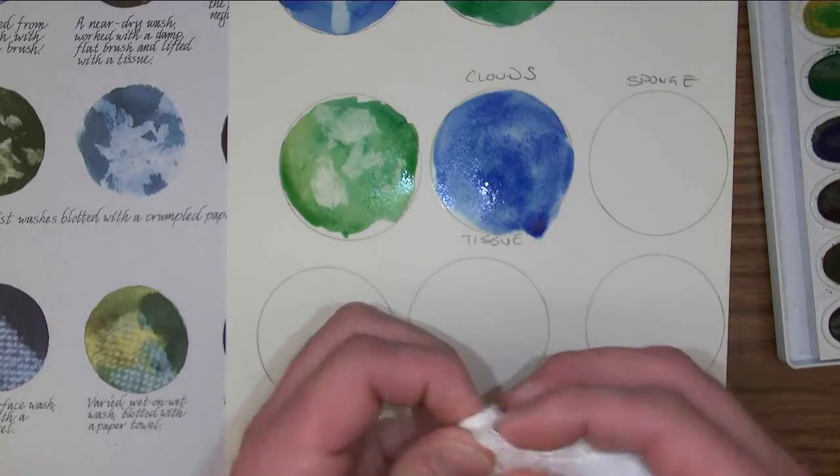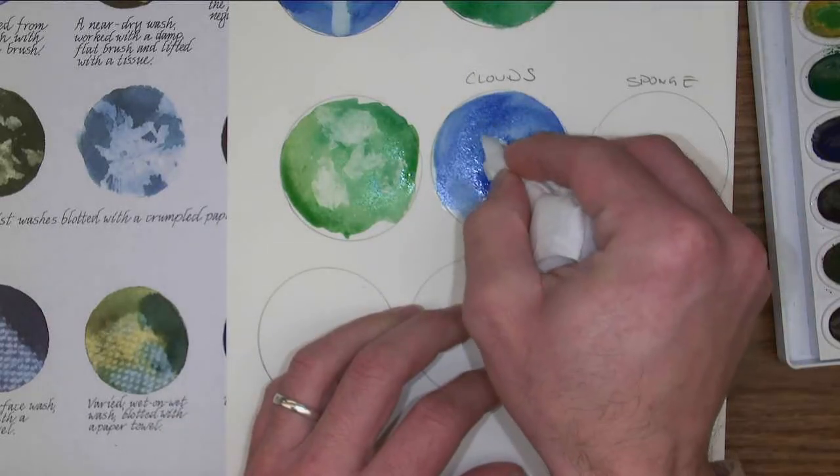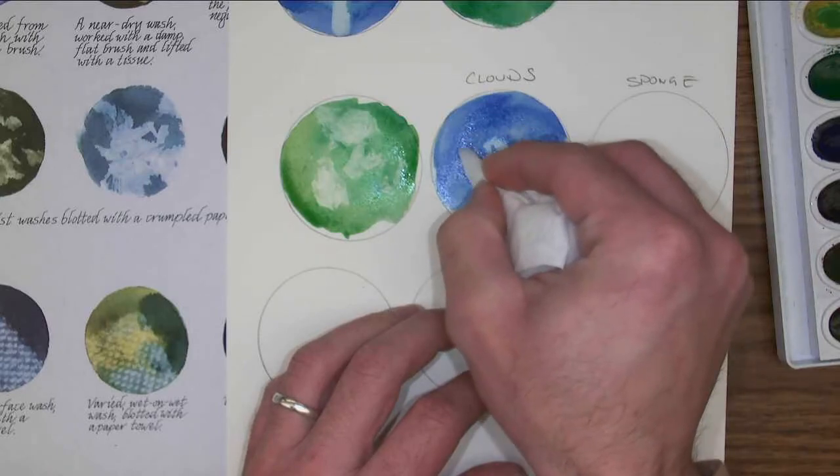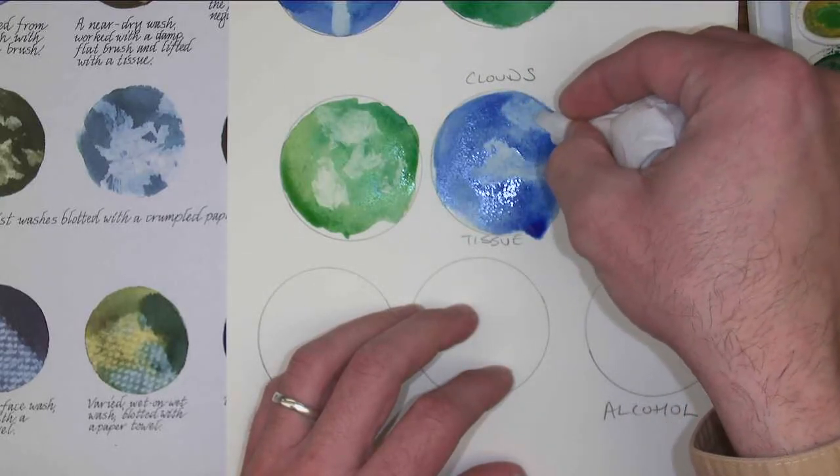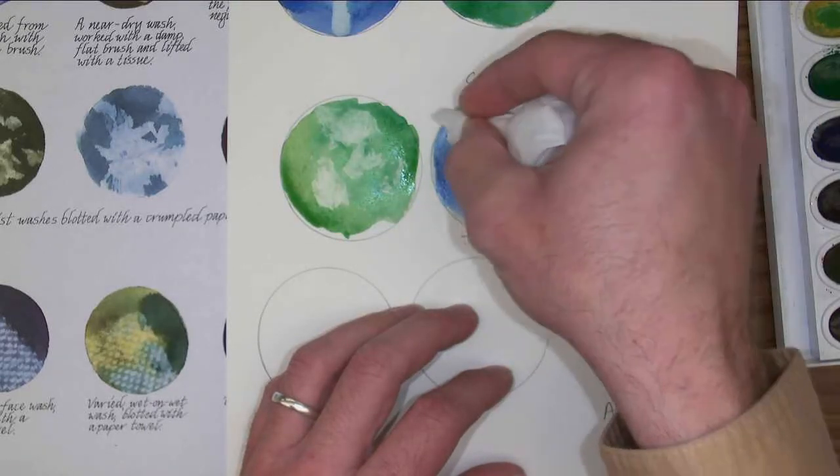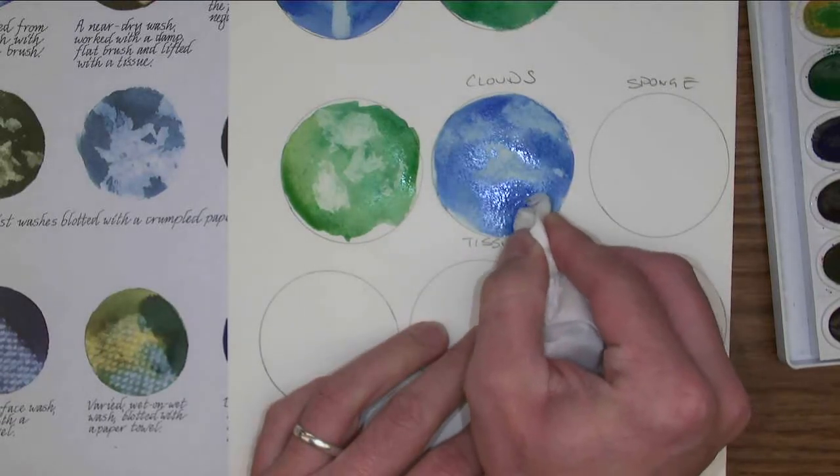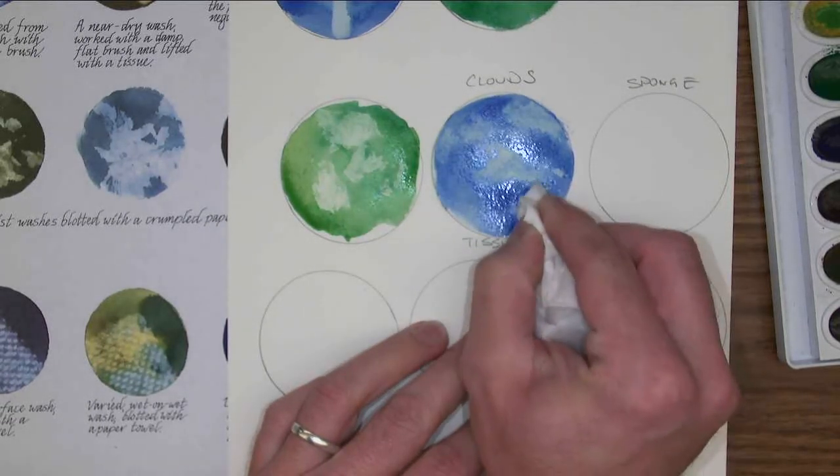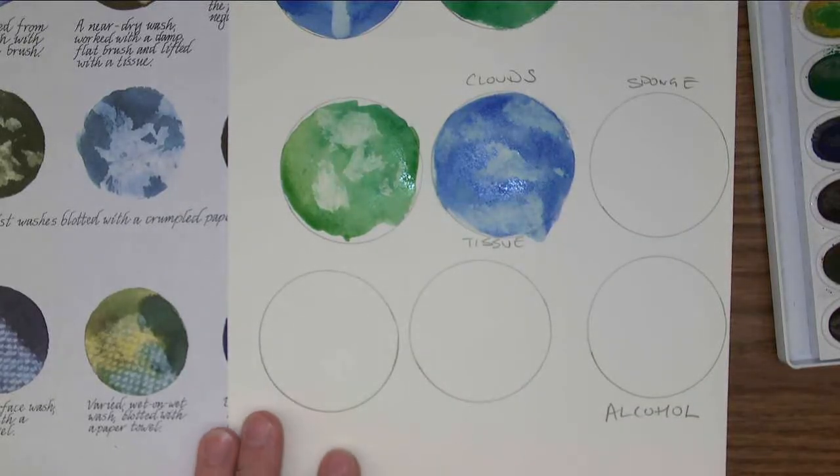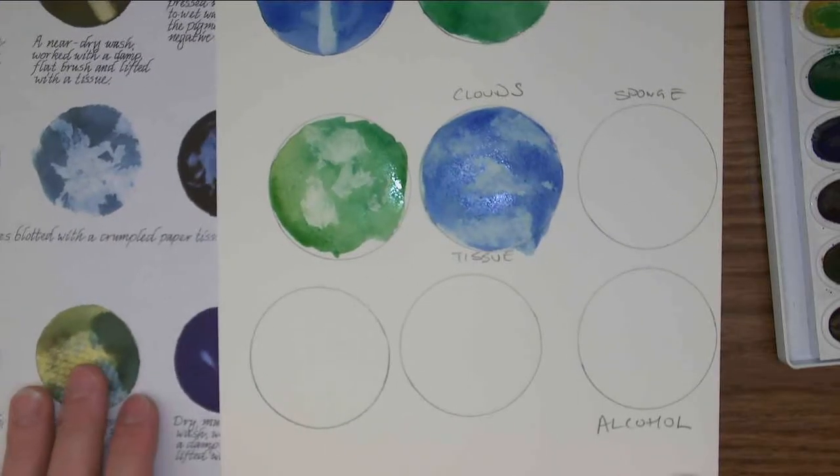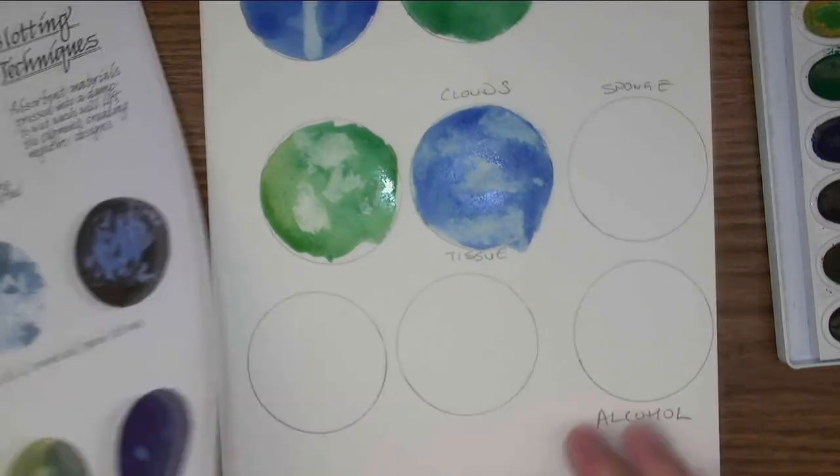Take my tissue. I'm going to draw some cloud shapes with the tissue. See how you can get some really interesting cloud shapes. Press harder to get a little bit more of the paint off. You can see how it creates some interest in terms of how clouds look. So it's the clouds with the tissue.